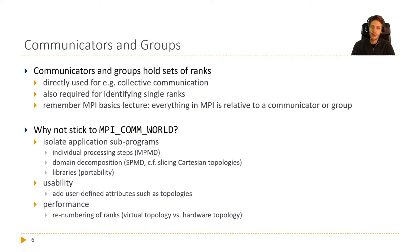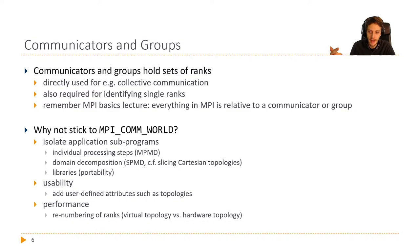For communicators and groups, it's important to know that both exist and there's a difference. Both hold sets of ranks. Communicators appear in all collective communication calls and are required for identifying single ranks — every send and receive call needs the source or destination rank ID together with the communicator to uniquely identify a rank. All of these things in MPI are relative to a communicator or a group.